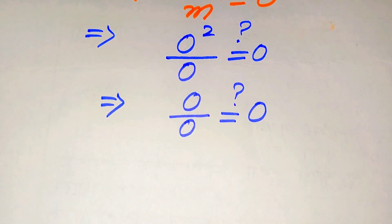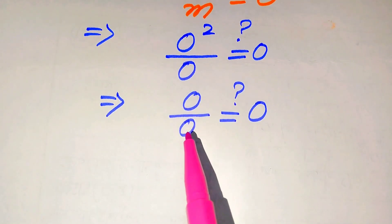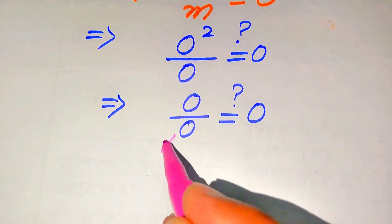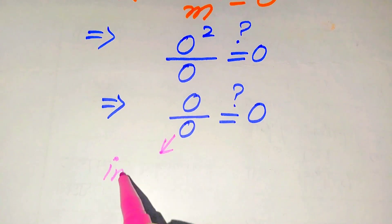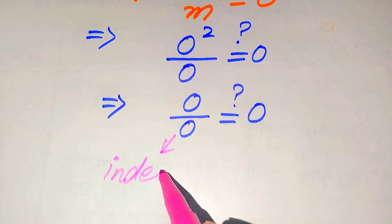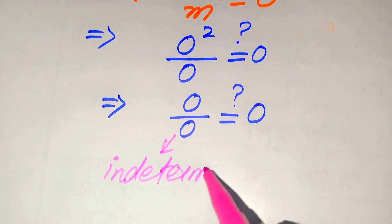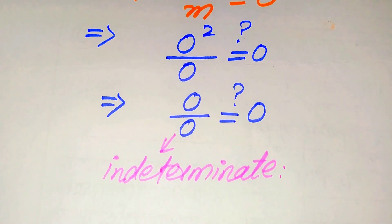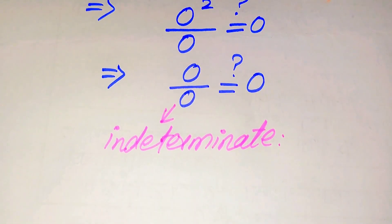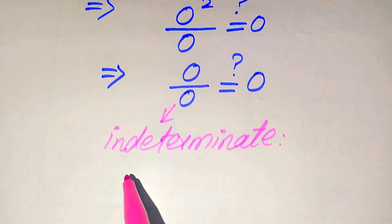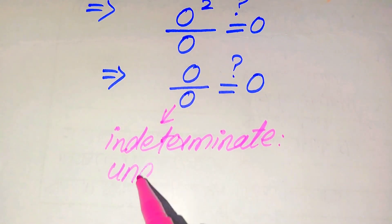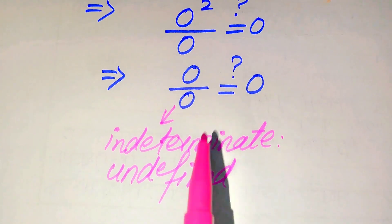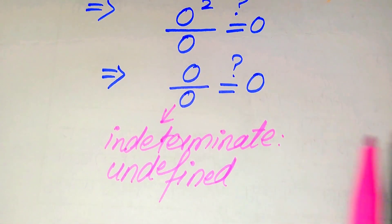On the left-hand side we have the 0 over 0 form. This form is called the indeterminate form. In other words, this type of form cannot be solved, or we simply say it is an undefined form.